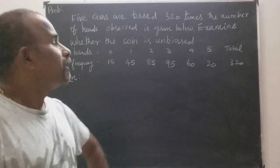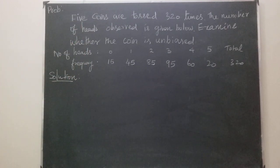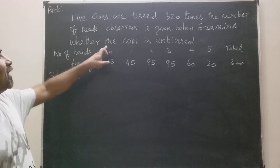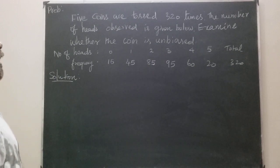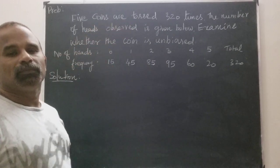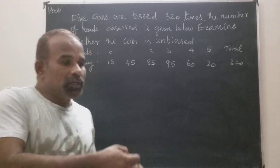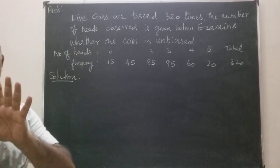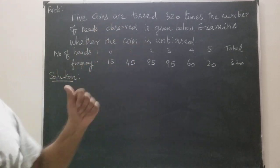Good morning. Consider this problem: 5 coins are tossed 320 times. The number of heads observed is given below. Examine whether the coin is unbiased. When a coin is tossed, there are two possible outcomes — head and tail — so therefore this problem comes under binomial distribution.